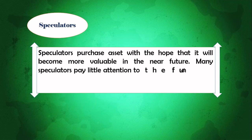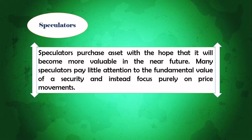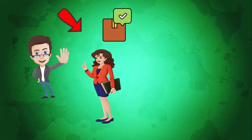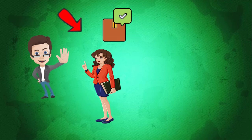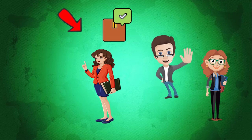Speculators purchase assets with the hope that they will become more valuable in the near future. Many speculators pay little attention to the fundamental value of a security and stay focused purely on price movements. In this example, Ish is predicting that the price of a stock is underpriced, so he is buying the stock from Lita and will wait until the price moves up to its actual price or becomes overpriced. When the stock is overpriced or reaches its actual price, Ish will sell the stock to Alexa and make a profit.